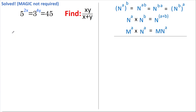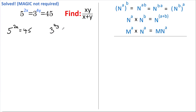Hi, welcome back. Today I'll be solving this odd-looking equation without the use of magic. If you want to give it a go yourself, pause the video now. Okay, let's begin. First, I'm going to set 5 to the power of 2x equal to 45, and I'm also going to set 3 to the 4y equal to 45.